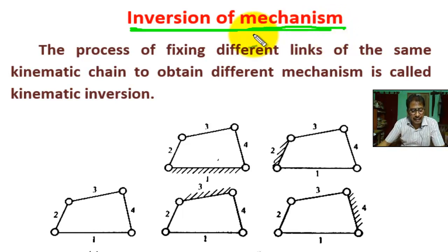Under kinematics of machines, this is a figure of a kinematic chain. We know when one link is fixed in the closed kinematic chain, then it is called a mechanism.